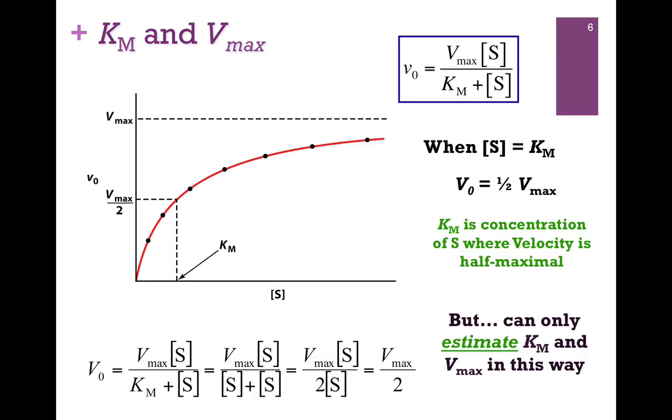Now we want to see how we can estimate Km from our graph. Here's our hyperbolic plot with the Michaelis-Menten equation at the top. We want to consider the special circumstance when the substrate concentration equals Km. I've substituted that in at the bottom left of the screen. When we do that, our expression simplifies to one-half Vmax. In other words, when substrate concentration equals Km, our velocity is half maximal. That gives us more of a conceptual, practical definition - Km is the concentration of substrate where the velocity is half maximum.